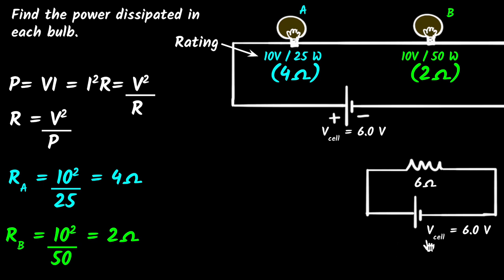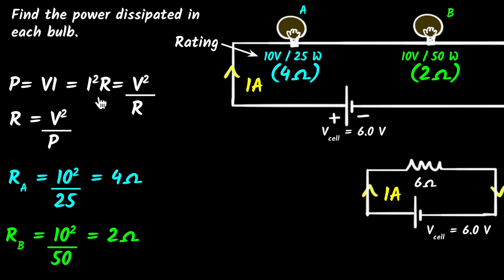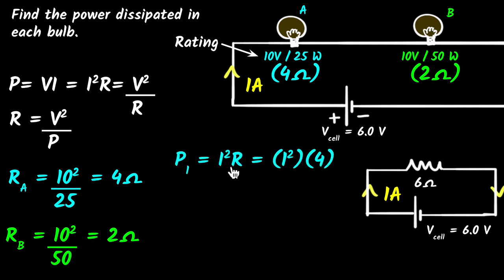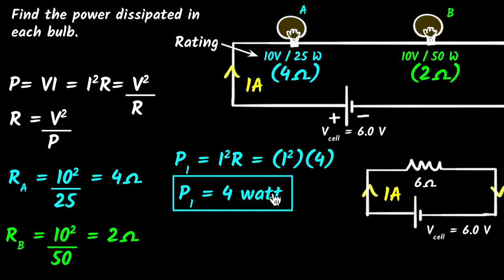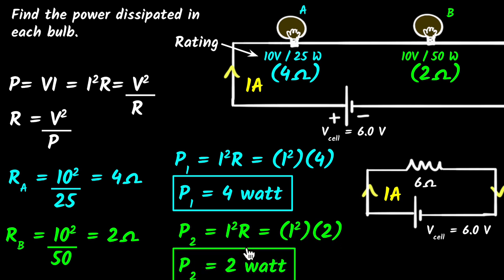From Ohm's law, V equals IR. With V equal to 6 volts and R equal to 6 ohms, I equals V over R equals 6 over 6 equals 1 ampere. That current of 1 ampere flows through both bulbs. The power dissipated in the first bulb is P1 equals I squared R equals 1 squared times 4 equals 4 watts. The power dissipated in the second bulb is P2 equals I squared R equals 1 squared times 2 equals 2 watts.